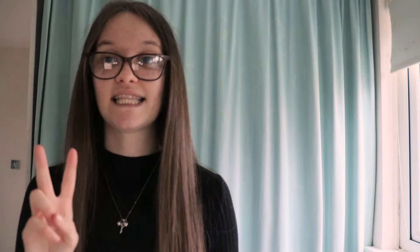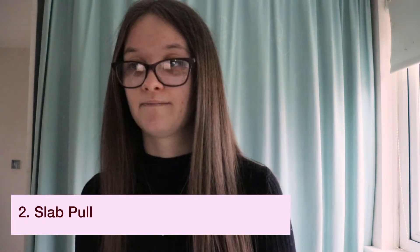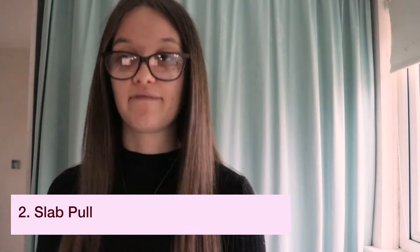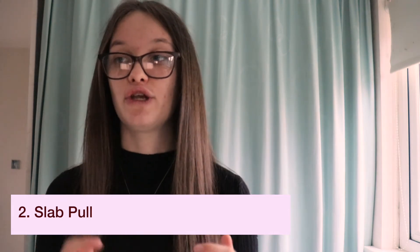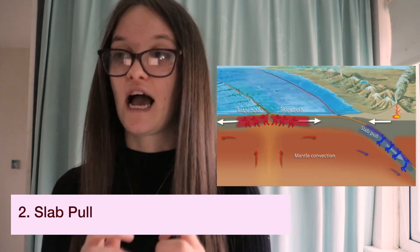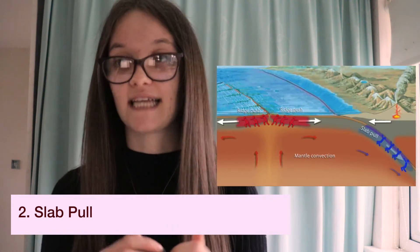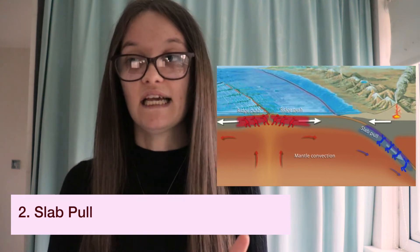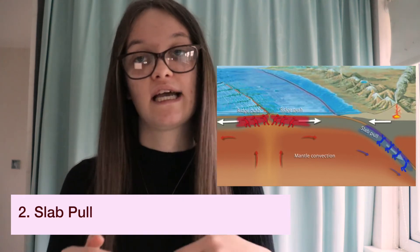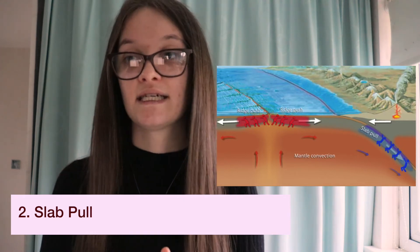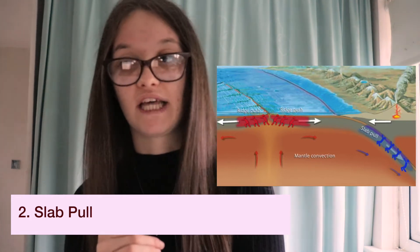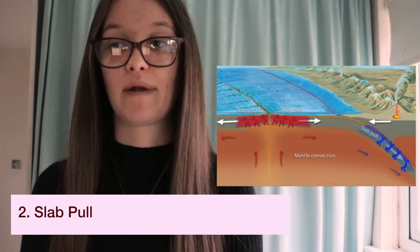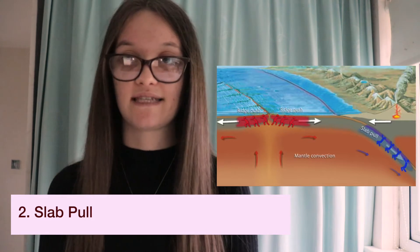The second theory is slab pull, which is increasingly seen as a major driving force for plate movement. It works on the basis that newly formed oceanic crust at mid-ocean ridges becomes denser and thicker as it cools. This causes it to sink into the mantle under its own weight, pulling the rest of the plate down with it, thus moving the plates consistently over millions of years.